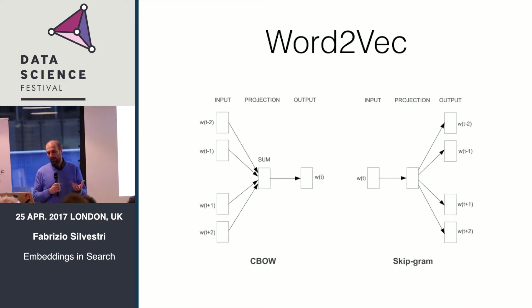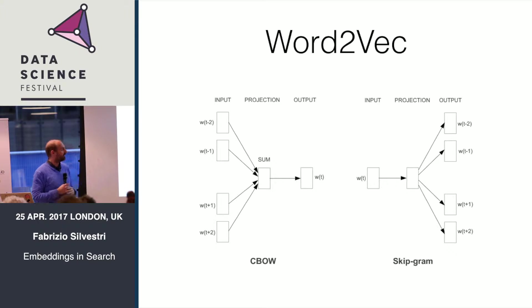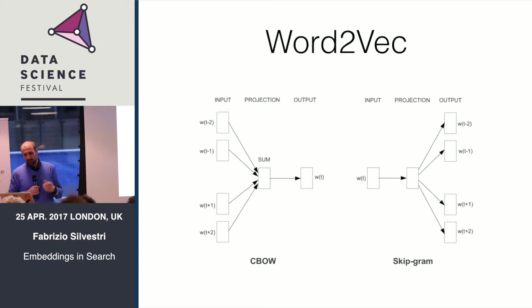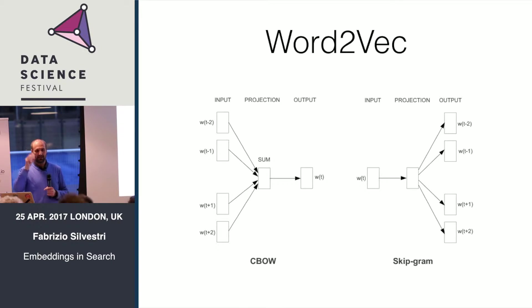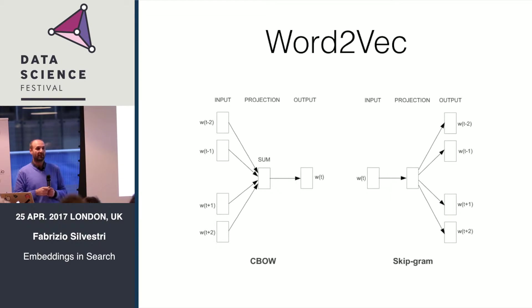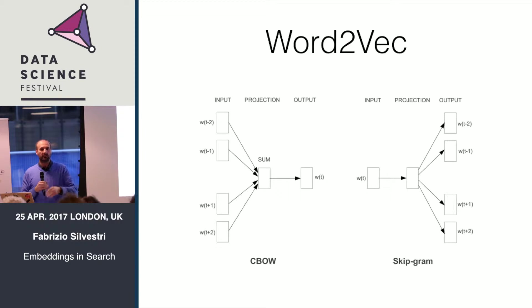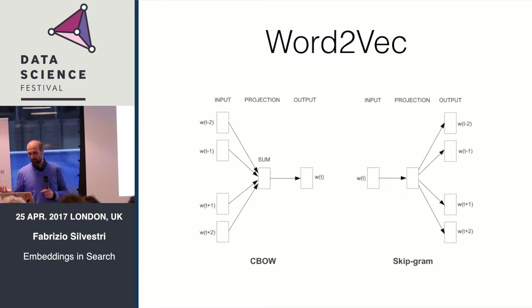The idea behind Word2Vec is pretty straightforward. In one of the two models, you are given a bunch of words and you want to predict the word that best fits in a phrase with those words — like a sentence with one word missing that you must guess. The other is the symmetric one: you are given a word and asked to guess the possible sentences containing it. The first is the Continuous Bag of Words model and the second is Skip-gram.